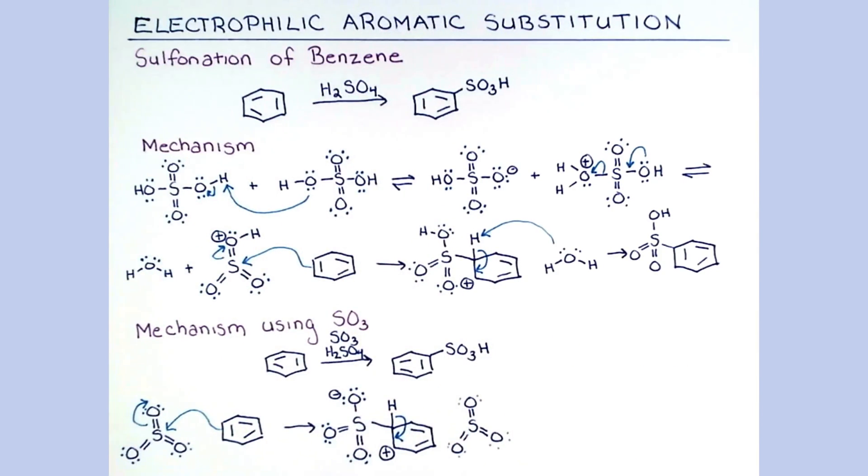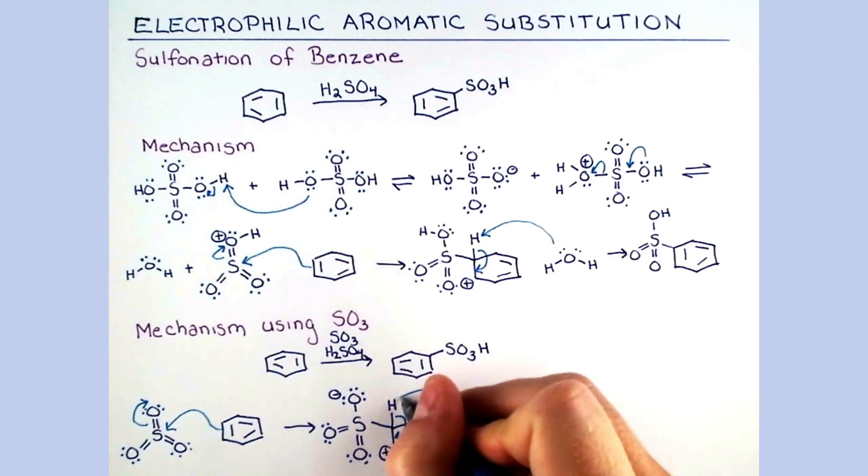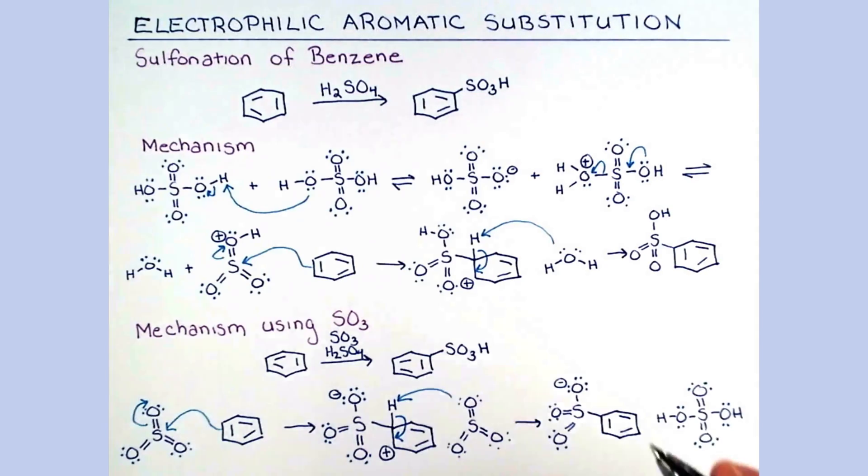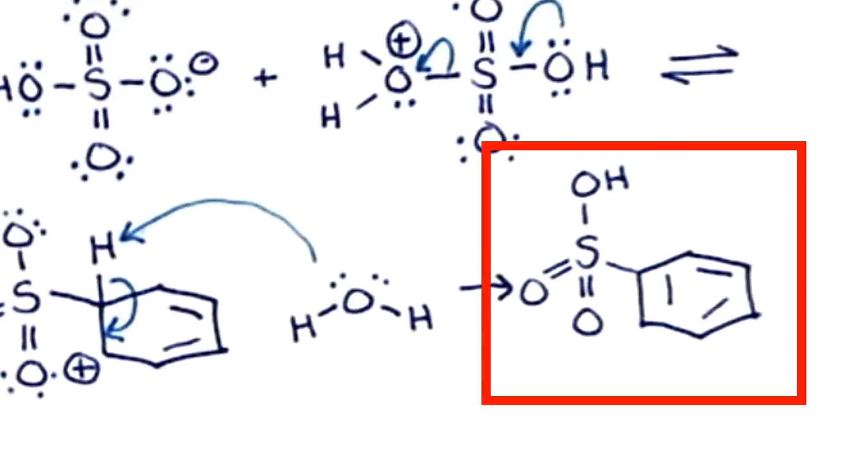If we use sulfur trioxide to do the deprotonation, we can create that great electrophile that we generated in the above mechanism. So, we'll show another molecule of sulfur trioxide deprotonating benzene. And a final protonation of this anion will give our sulfonic acid, which was drawn above.